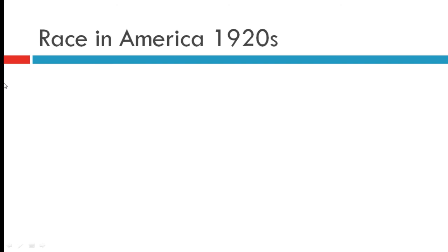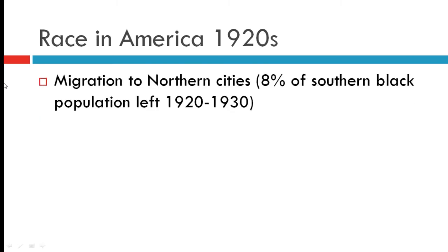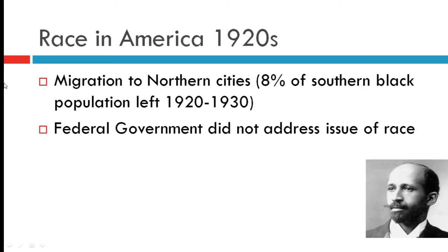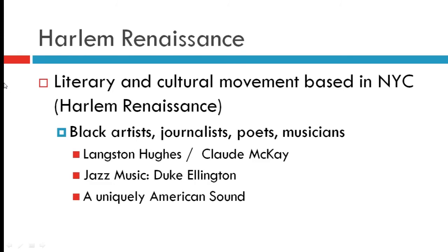There are a couple of things that brought underlying racial issues to the surface in the early 20th century. The first was the migration of large numbers of African Americans to northern cities looking for jobs. Since the federal government didn't address these issues, individuals like W.E.B. Du Bois, a founding member of the NAACP, took up the cause themselves. Another development that caused concern among some Americans was the Harlem Renaissance — a large literary and cultural movement based in New York City's Harlem, involving Black artists, journalists, poets, and musicians. Younger Americans were more likely to embrace this artistic expression than older Americans.